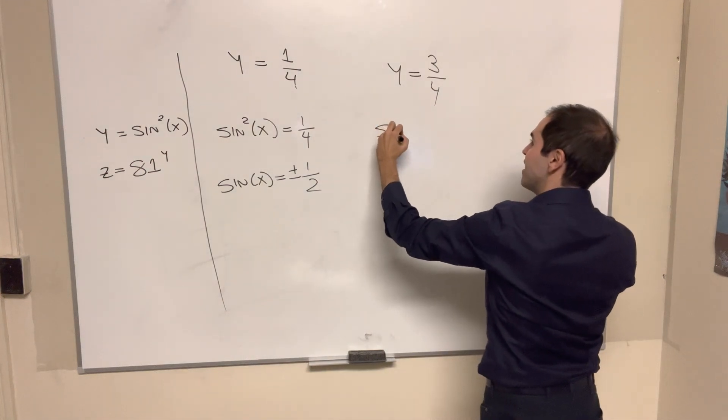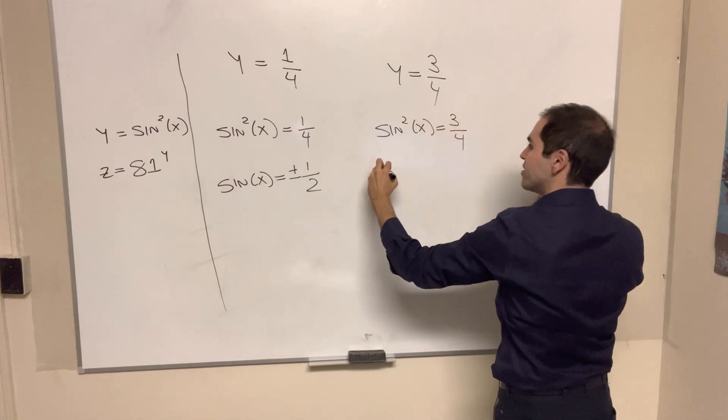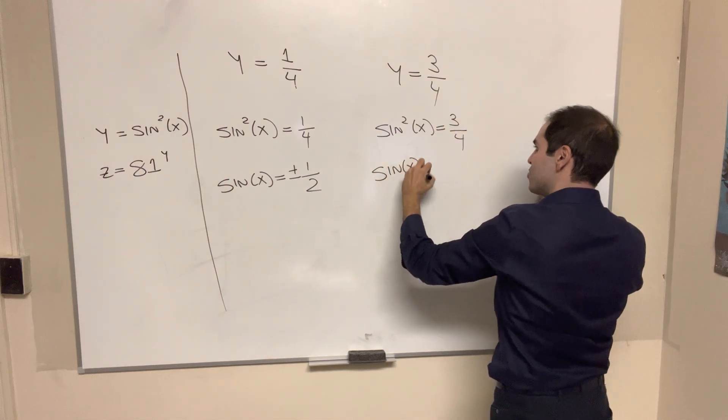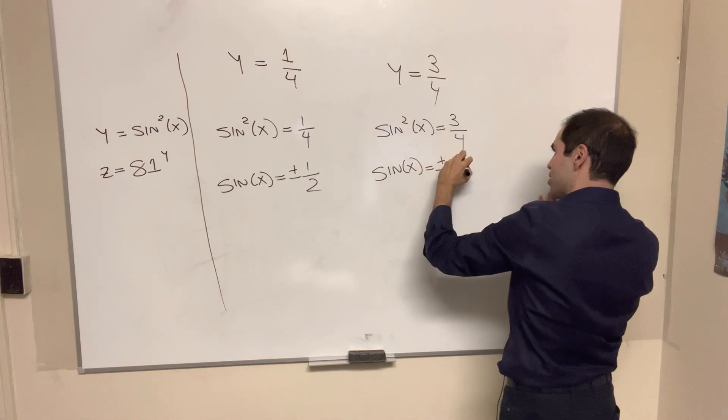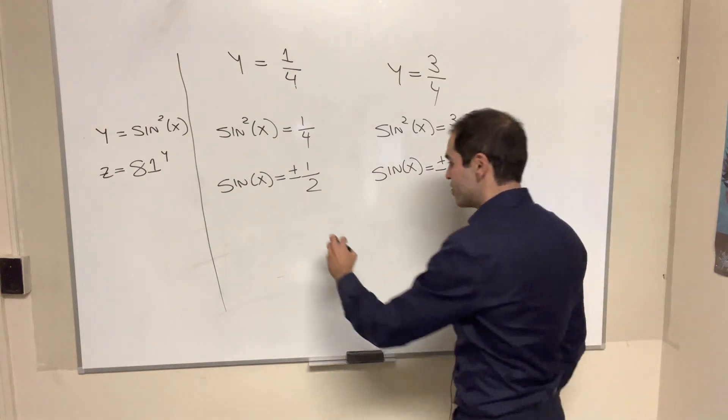On the other hand, sine squared x is 3 quarters. So sine of x is plus minus square root of 3 over 2. And then what does that look like on a trig circle?